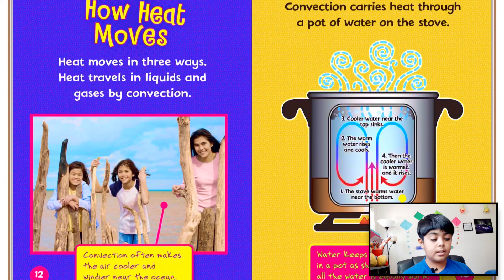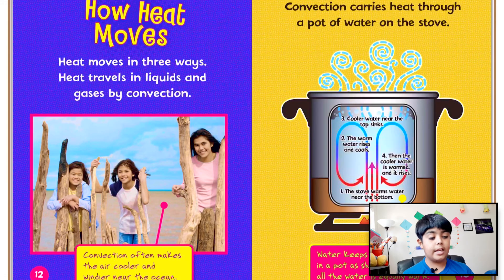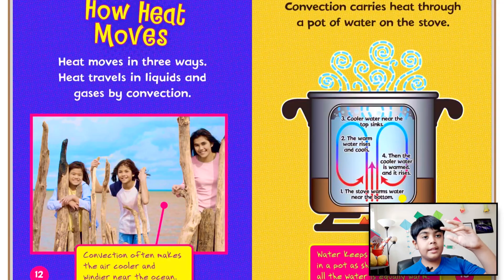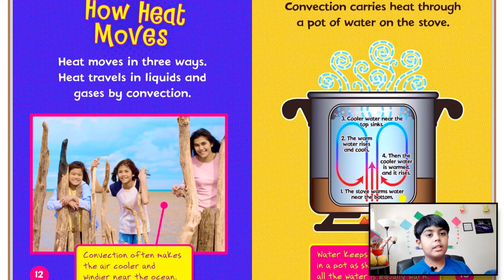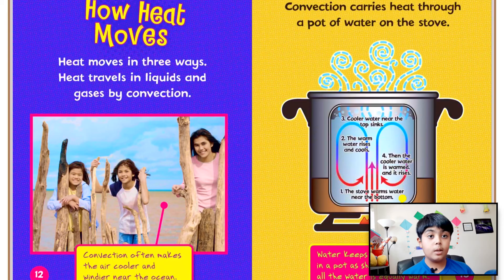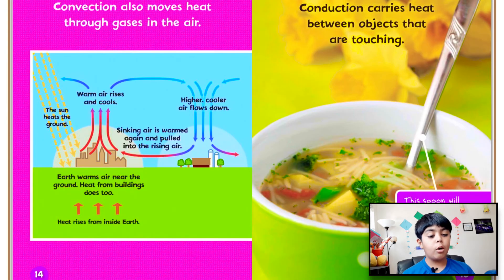Then the cooler water is warmed again and rises — so that's how the water gets warm. The warm water rises up, the cool water sinks down, and it keeps going in a cycle until it's all warmed up. Water keeps moving around in the pot until all the water is equally warm. Convection also moves heat through gases in the air.